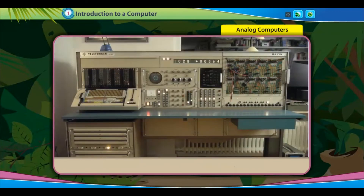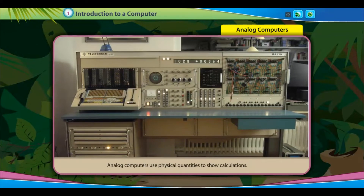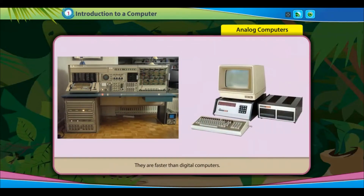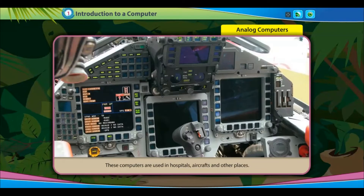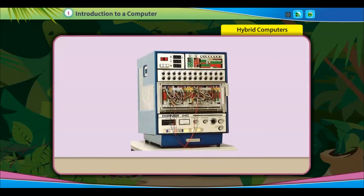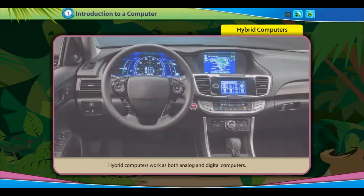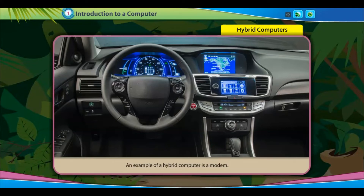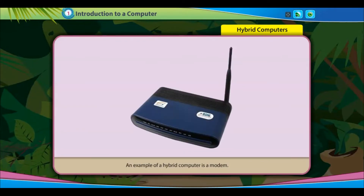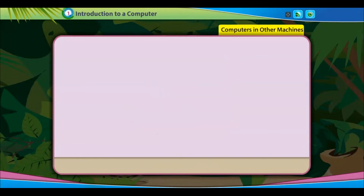Analog computers use physical quantities to show calculations. They are faster than digital computers and are used in hospitals, art crafts, and other places. Hybrid computers work as both analog and digital computers. They operate by both counting and measuring. An example of a hybrid computer is a modem.